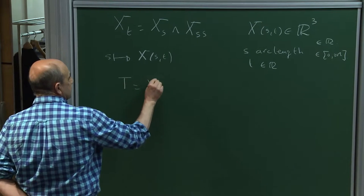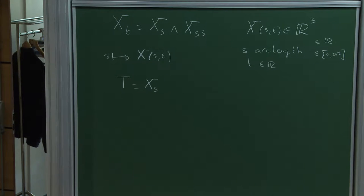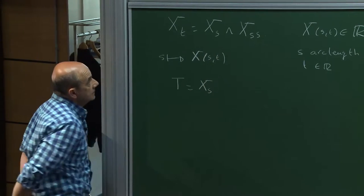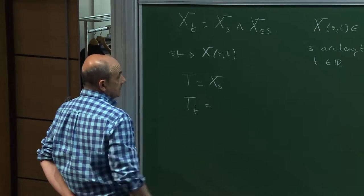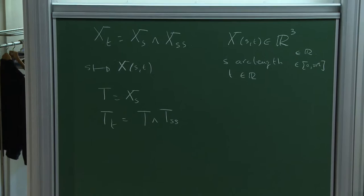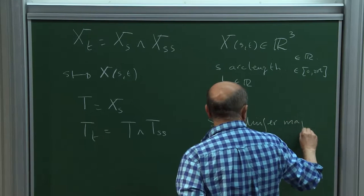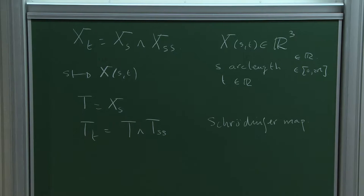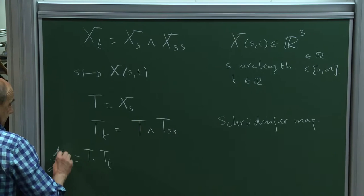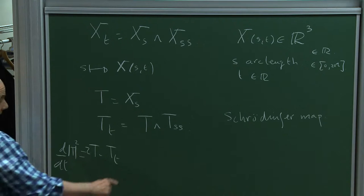In order to do that I have to define the tangent vector T, which is the derivative with respect to S of capital X. If I differentiate, when the derivative falls with respect to S I get zero, and the only remaining term is what is called the Schrödinger map. The case I am interested in is onto the sphere in R³, because if I compute the derivative of the length squared of the tangent vector, this immediately is zero.